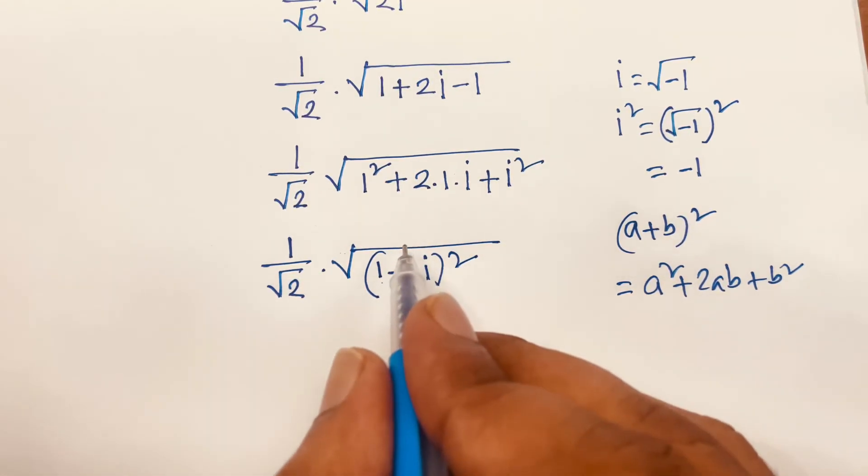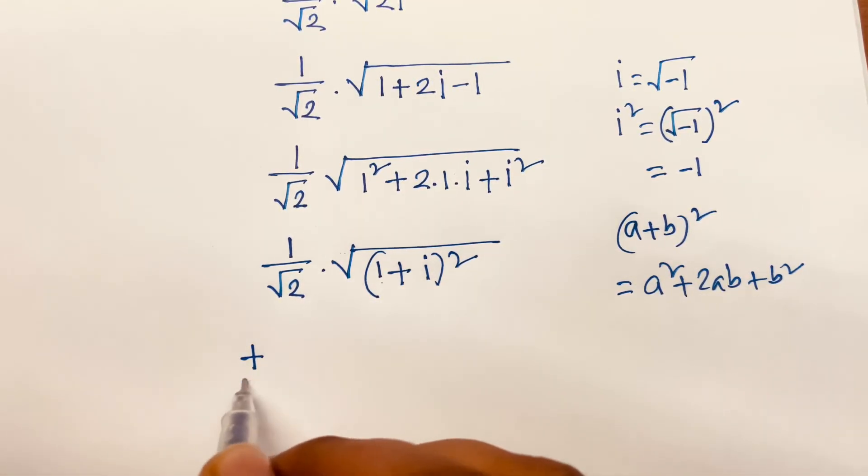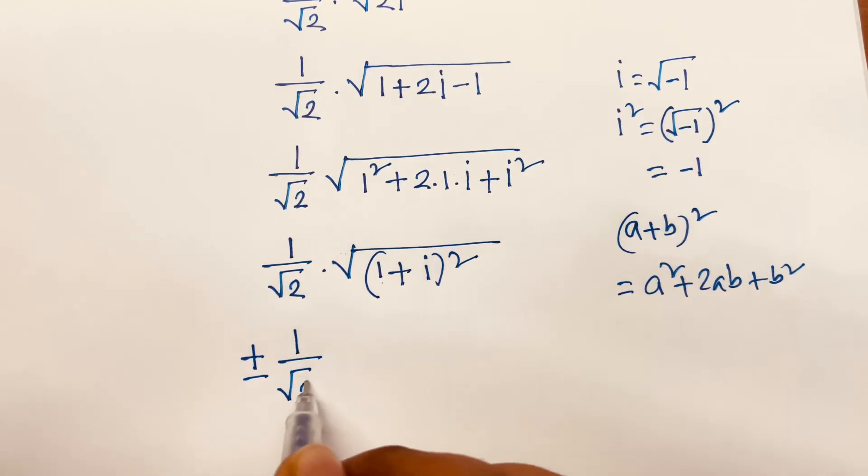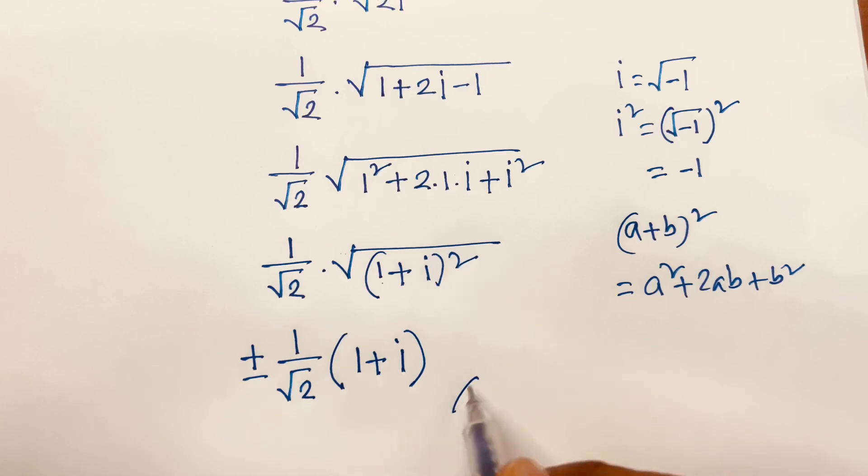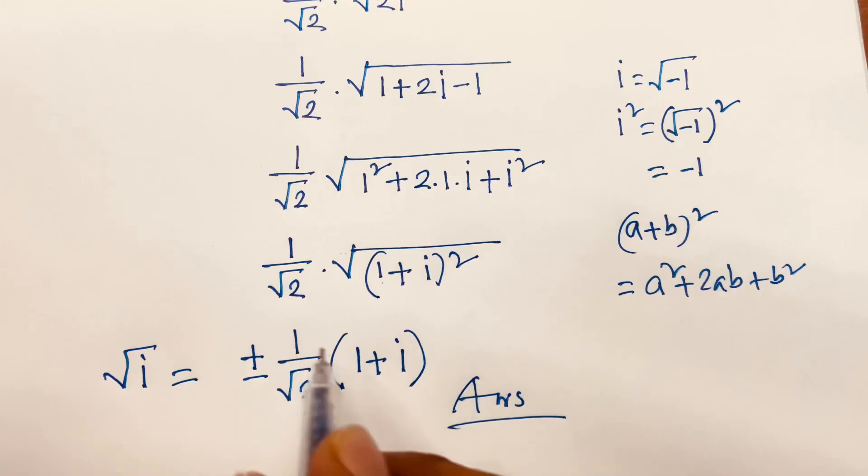Then, square root is cancelled. So, we find out here is plus minus 1 over square root 2, 1 plus i. So, this is our final answer. I can say square root i is equal to plus minus 1 over square root 2, 1 plus i.